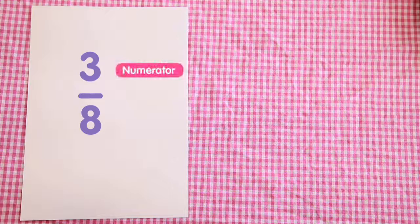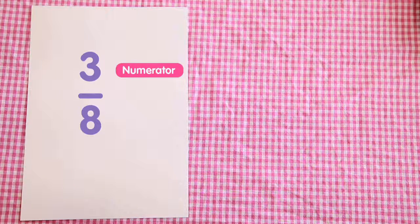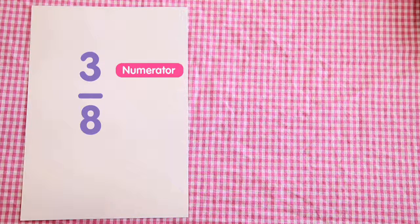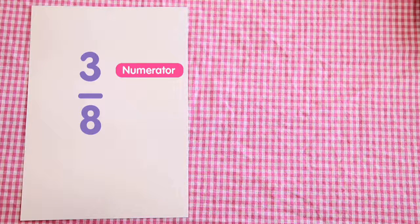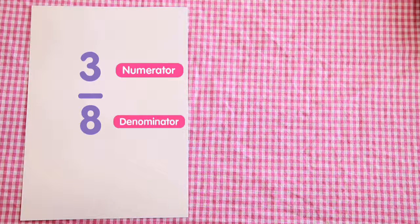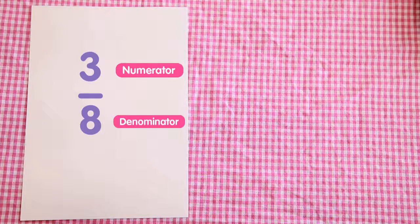Here is the fraction three-eighths. The top of the fraction is always called the numerator. This represents the parts of the fraction we have. The bottom of the fraction is called the denominator. This represents the overall total of the fraction.